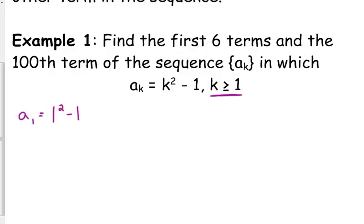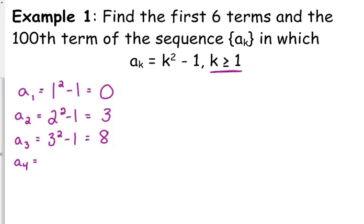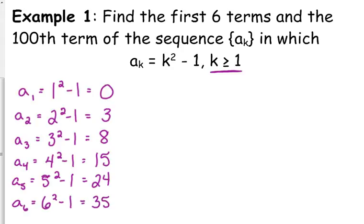So, this inequality right here is telling us where to start. We start with k equals 1. So everywhere we see k in our equation, we're going to plug in a 1. So a sub 1, the first term, is equal to 1 squared minus 1, which is 0. It wants us to find the first six, so we're going to keep going. The second term, a sub 2, is equal to 2 squared minus 1. That's 4 minus 1. That's 3. A sub 3 is equal to 3 squared minus 1. That's 9 minus 1, which is 8. A sub 4, 4 squared minus 1 is 16 minus 1, which is 15. A sub 5 is 5 squared minus 1, which is 25 minus 1, which is 24. A sub 6 is 6 squared minus 1, which is 35. Those are the first six terms.